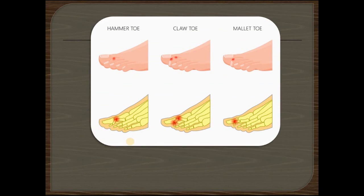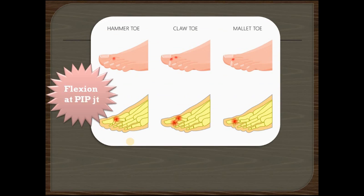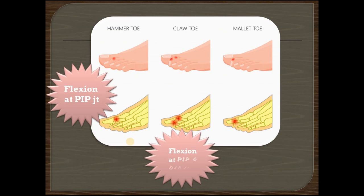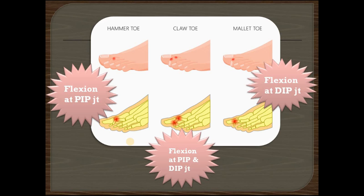Let's clarify the difference between hammer toe, claw toe and mallet toe. In hammer toe there is flexion at the PIP joint. In claw toe there is flexion at both the PIP and the DIP joints. In mallet toe there is flexion at the DIP joint only.